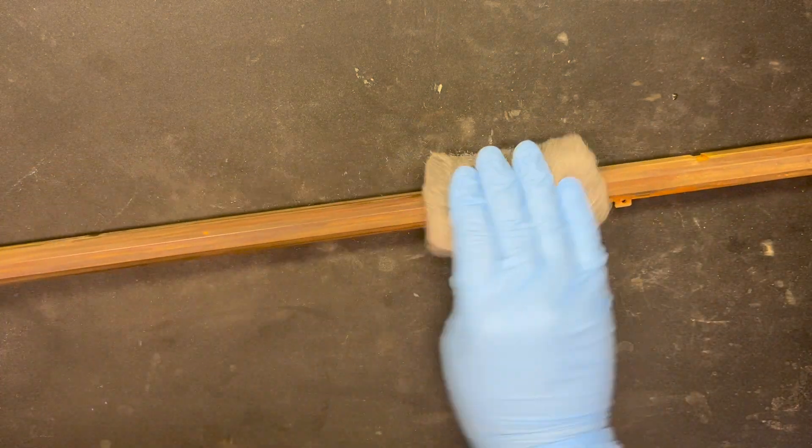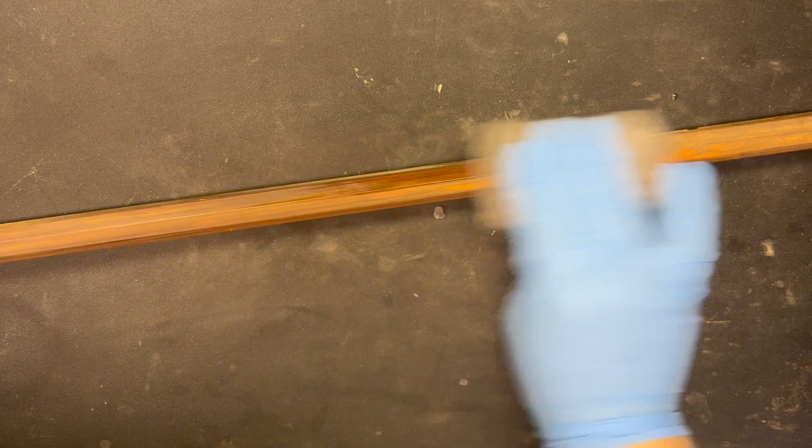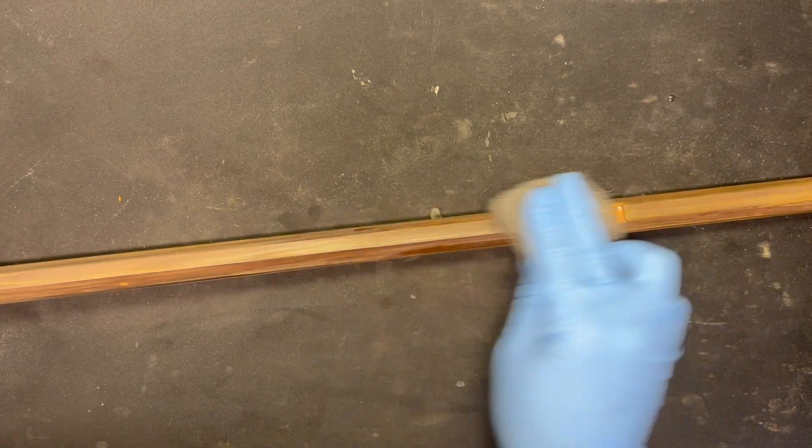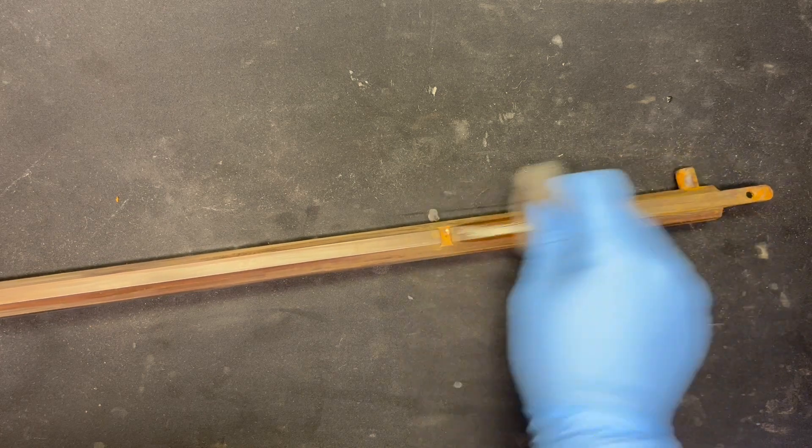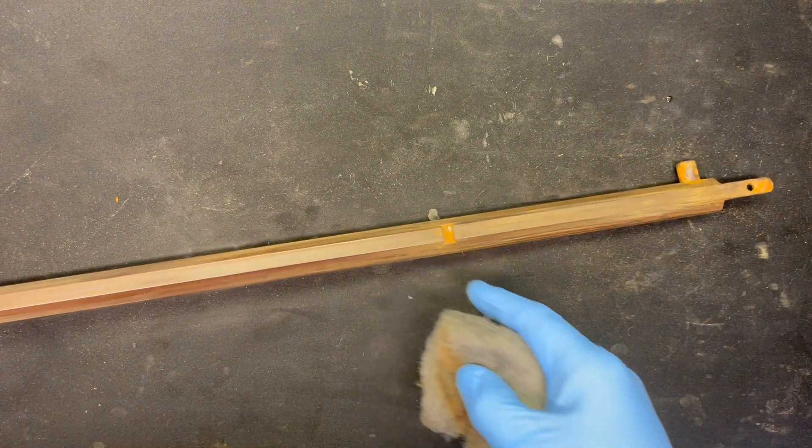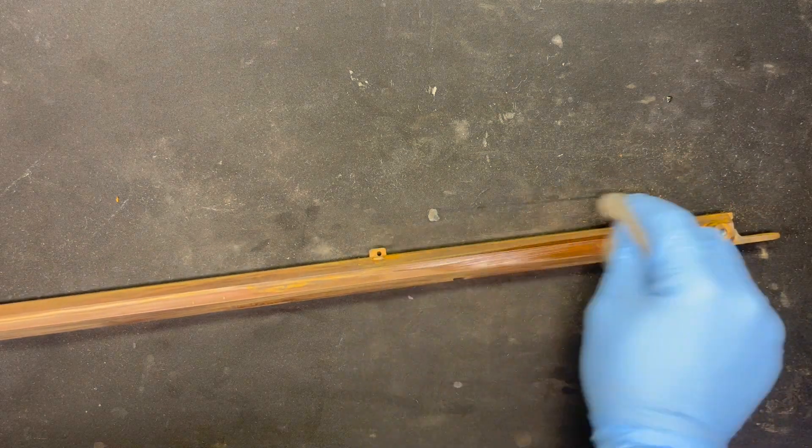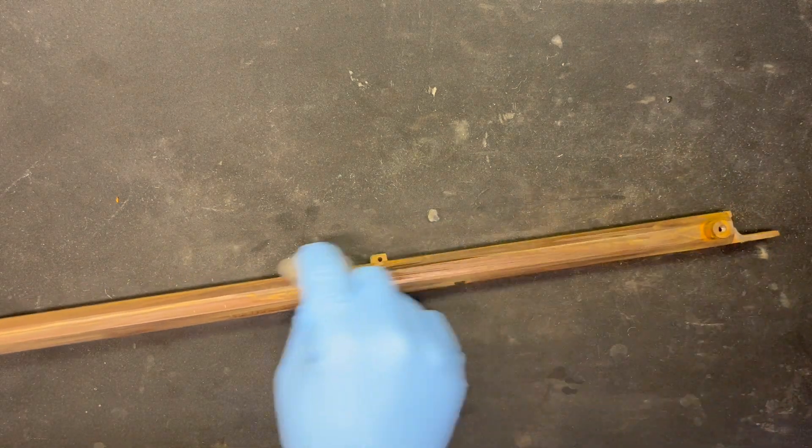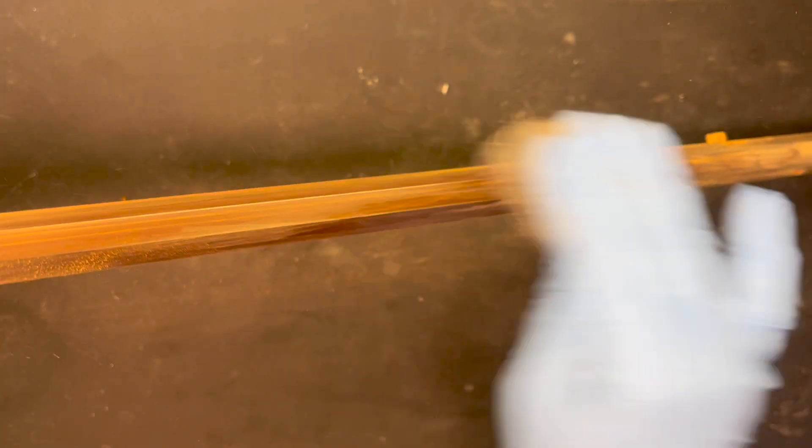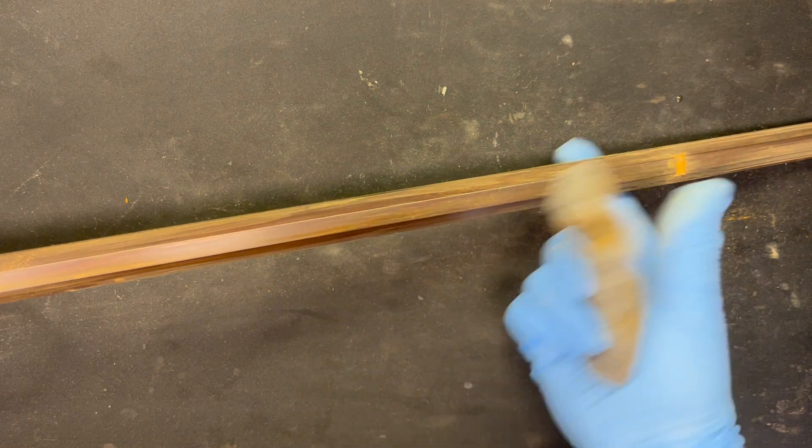It says go ahead and put decent pressure on it, don't worry about messing it up because we're gonna do several coats. We're getting all that rust off, the scaling. I'm gonna have to figure something out to get down inside the dovetails for the sights.